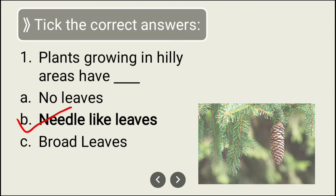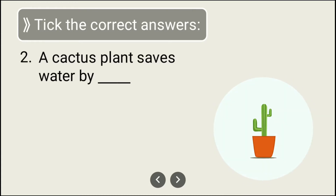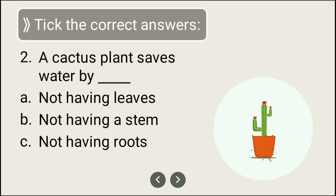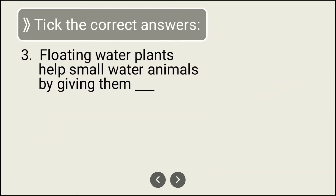The second question: a cactus plant saves water by — options are: not having leaves, not having a stem, not having roots. If you have seen cactus plants, you might have noticed they don't have leaves, so the correct option is A: not having leaves.